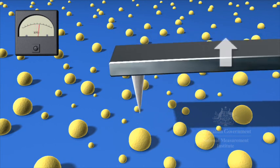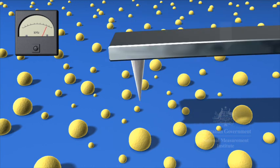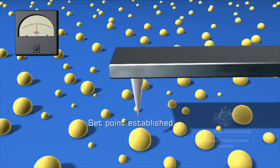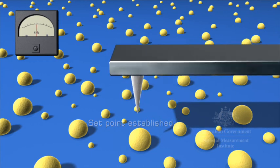The cantilever returns to its unperturbed vibration when withdrawn from the sample. The set point for the cantilever vibration determines the distance between the tip and the sample for imaging.